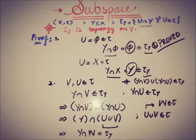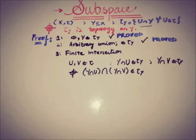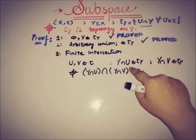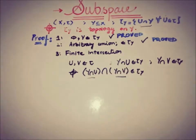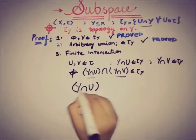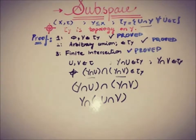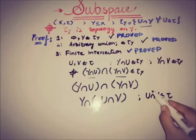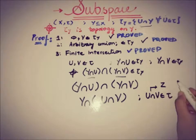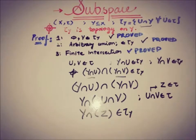Now moving toward the third axiom of finite intersections. If U and V are two open sets in τ, then Y ∩ U and Y ∩ V are both members of τ_Y. Our target is that their intersection must also be a part of τ_Y. We can write (Y ∩ U) ∩ (Y ∩ V) as Y ∩ U ∩ V. Since U and V are members of τ, by definition of topology U ∩ V must also be in τ. Letting Z = U ∩ V, we get Y ∩ Z, which is a member of τ_Y. So the third axiom is also proved.